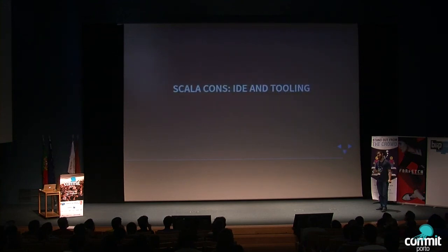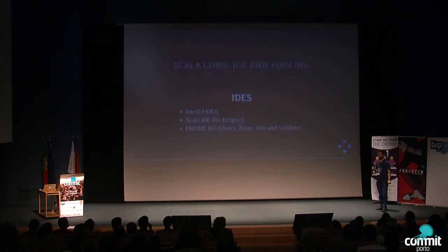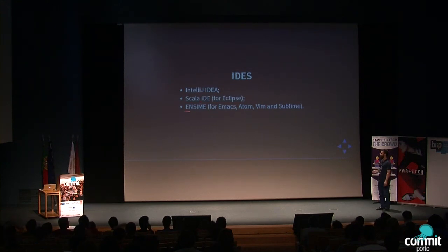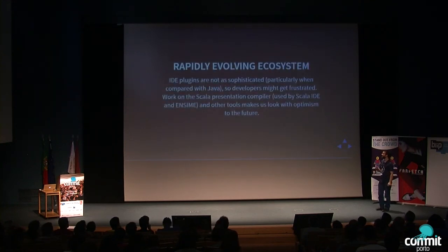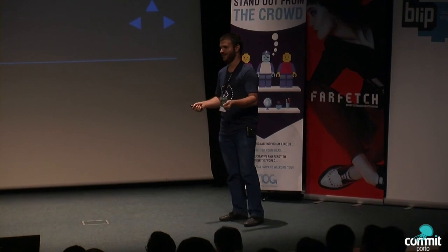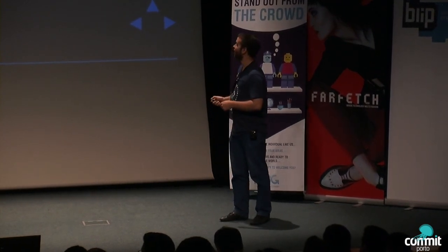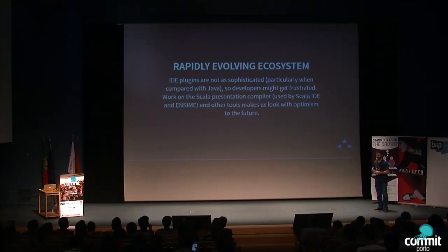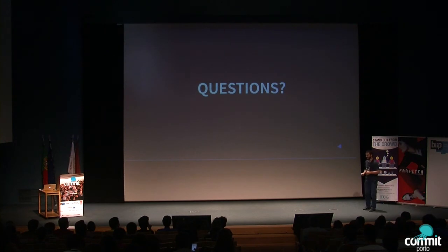One other con of Scala is IDE and tooling support. There are three major IDEs: IntelliJ IDEA is the most used, there's Scala IDE for Eclipse, and there's Ensime for editors like Atom, Vim, and Sublime. The ecosystem is rapidly evolving — there's been work on the Scala presentation compiler that stops at the typer phase and provides type-checking information to IDEs. Scala IDE and Ensime are already using it, and IntelliJ has its own plugin. That's it — I think I made it on time. Thank you.